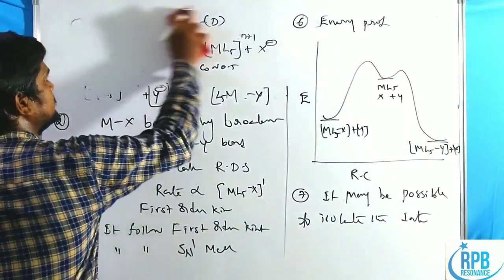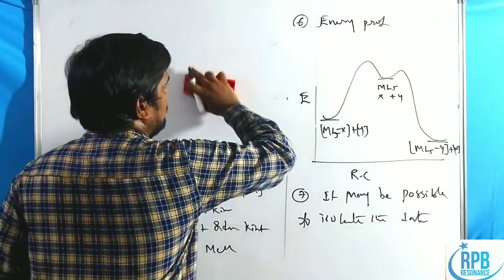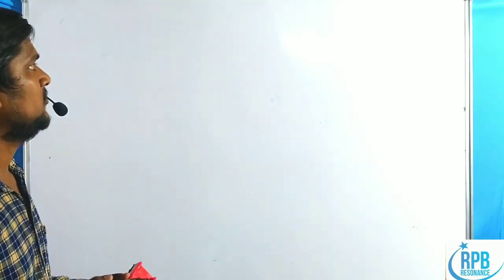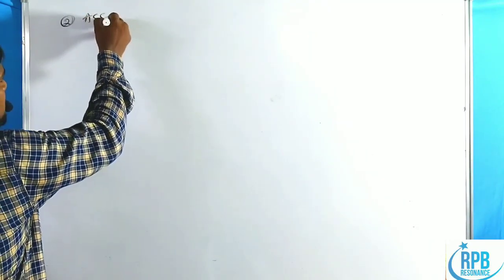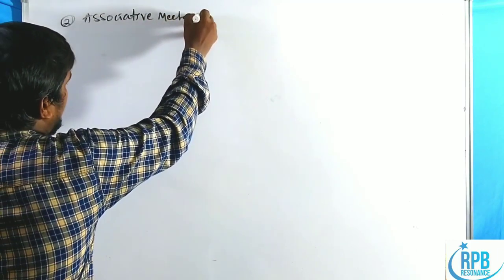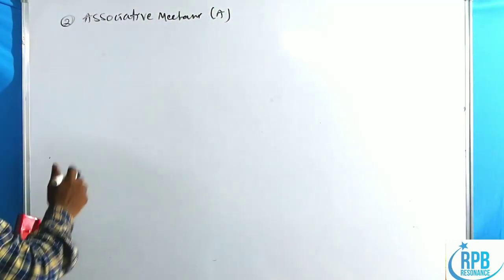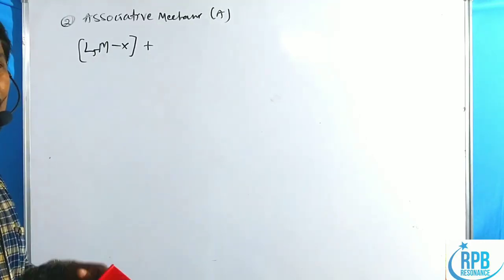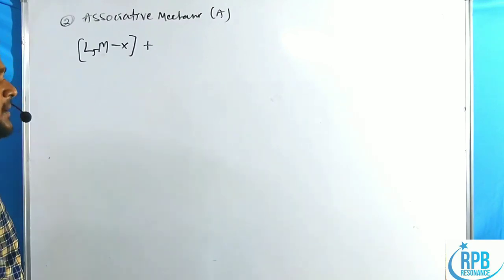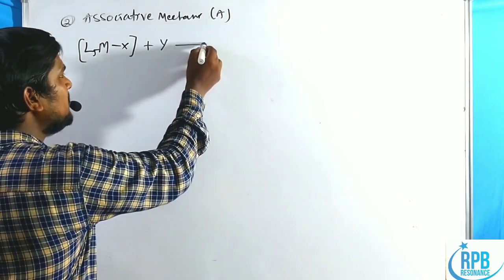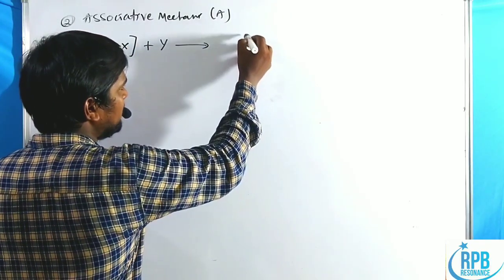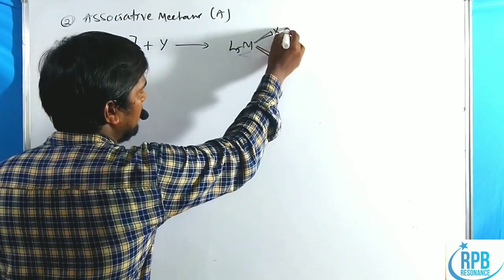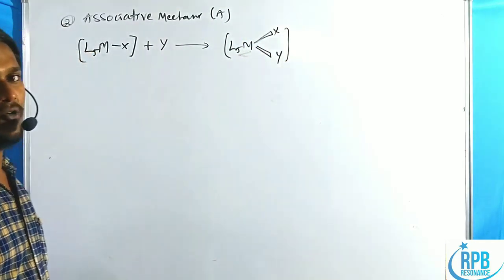Now let us discuss the associative mechanism, denoted as A. Unlike the dissociative case where MX bond cleavage occurs first, here the incoming nucleophile Y minus first approaches the central metal atom. This forms a seven-coordinate intermediate ML5XY, with coordination number 7, before any bond breaking occurs. The coordination number thus increases from 6 to 7.